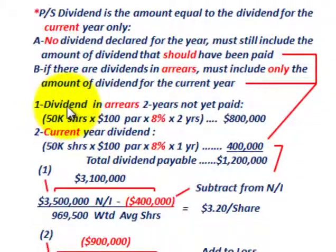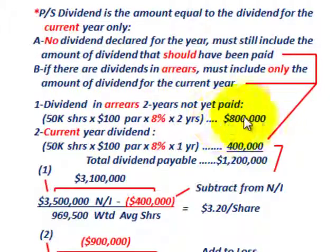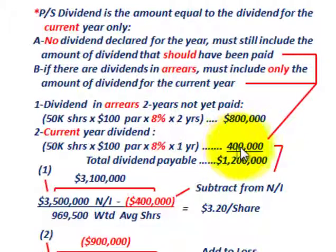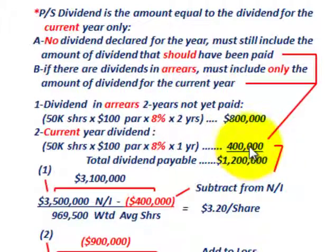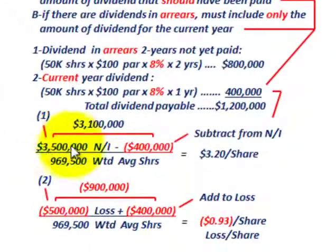In our example, dividends in arrears of two years: 50,000 shares × $100 par × 8% × 2 years = $800,000. The current year dividend is the same calculation for one year: $400,000. Total dividends payable (two years in arrears plus current year) is $1,200,000. However, for earnings per share, we only use the current year dividend of $400,000.